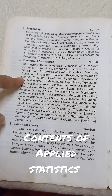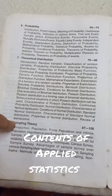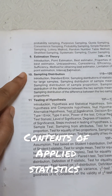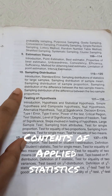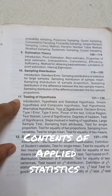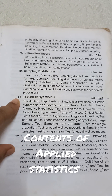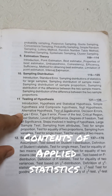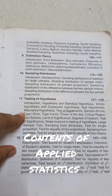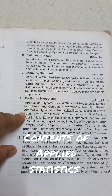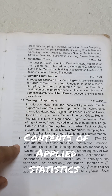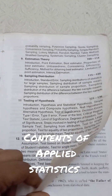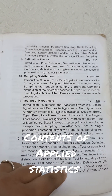We then have probability, theoretical distributions, sampling theory, estimation theory, and sampling distributions. After that, we cover testing of hypothesis, including one-sample tests, two-sample tests, and small sample tests.